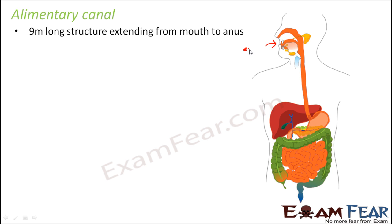The alimentary canal starts from the mouth and ends at the anus, where exit of undigested food material happens. This tube-like structure starts at the mouth, becomes swollen to form the stomach, then coils into the small intestine, and finally into the large intestine, ending at the anus. It is one single tube — sometimes thick, sometimes thin, sometimes coiled — called the alimentary canal, nine meters long.